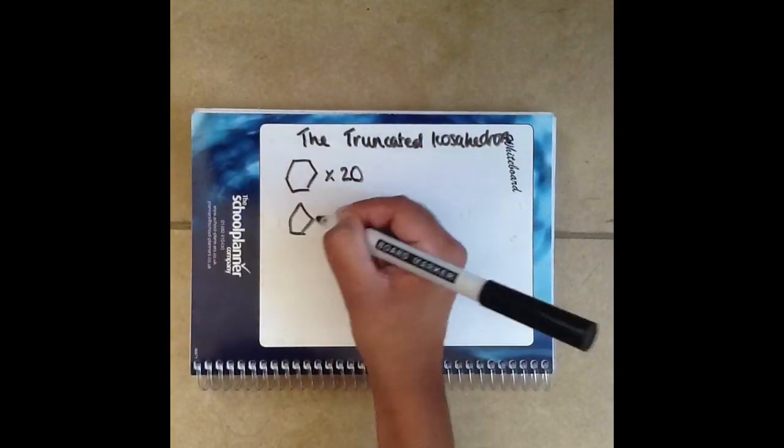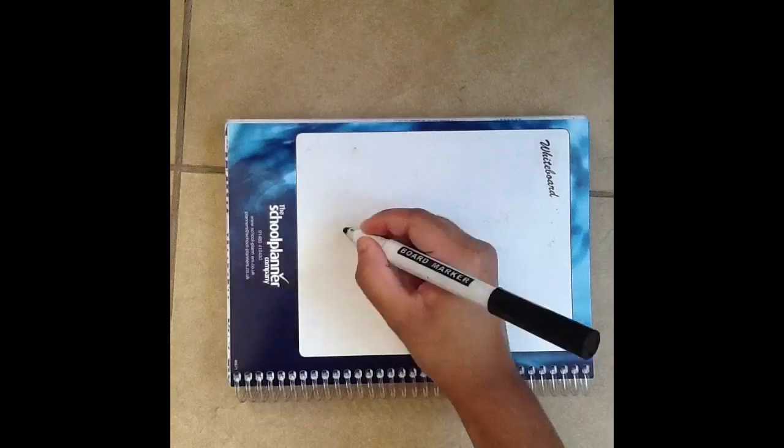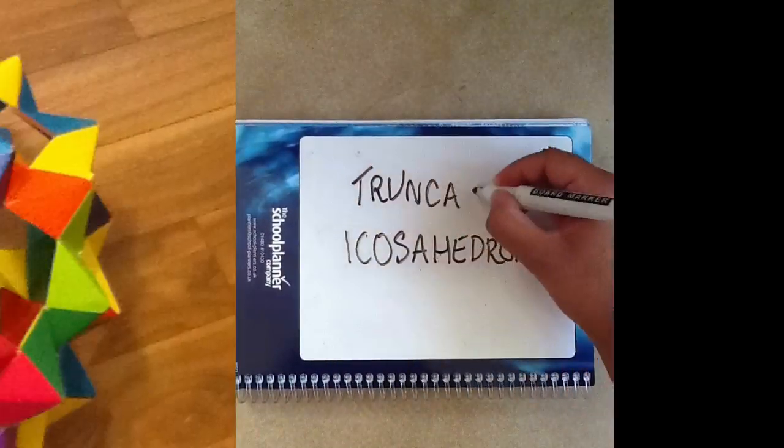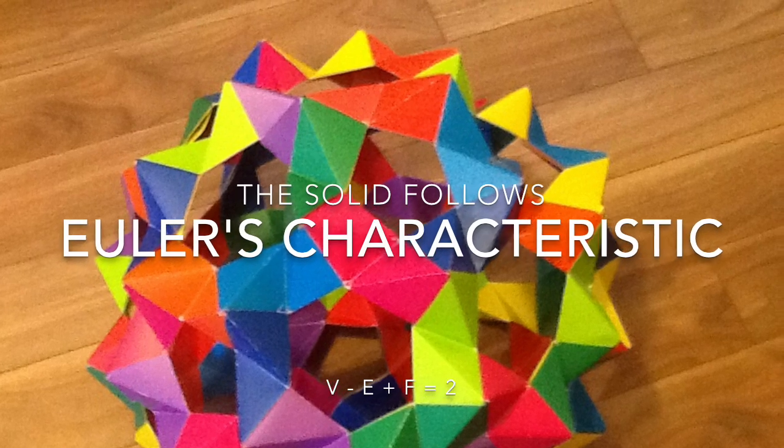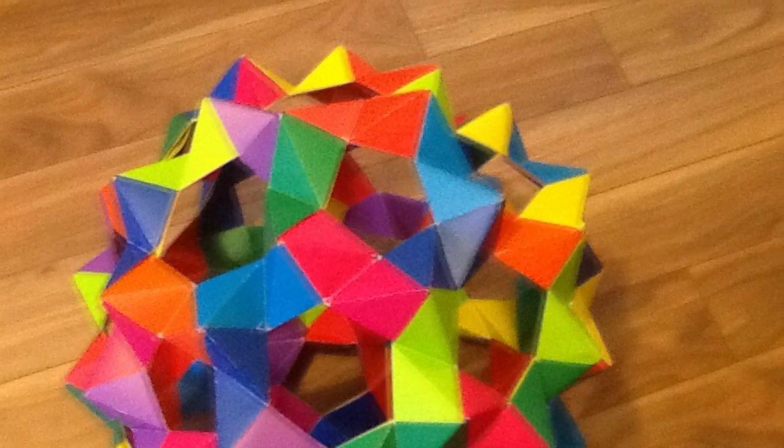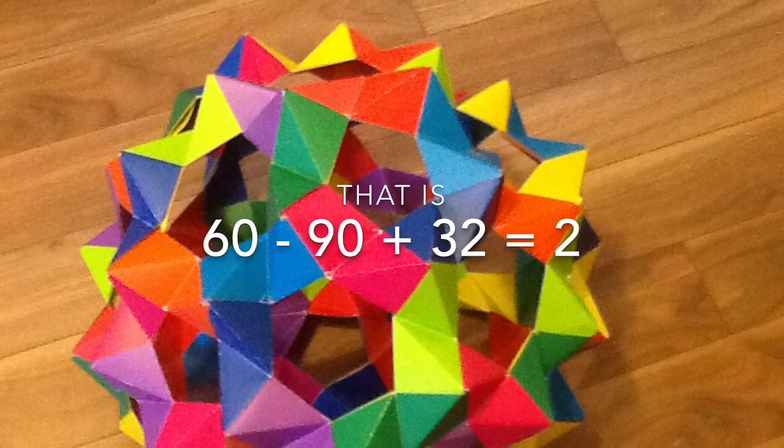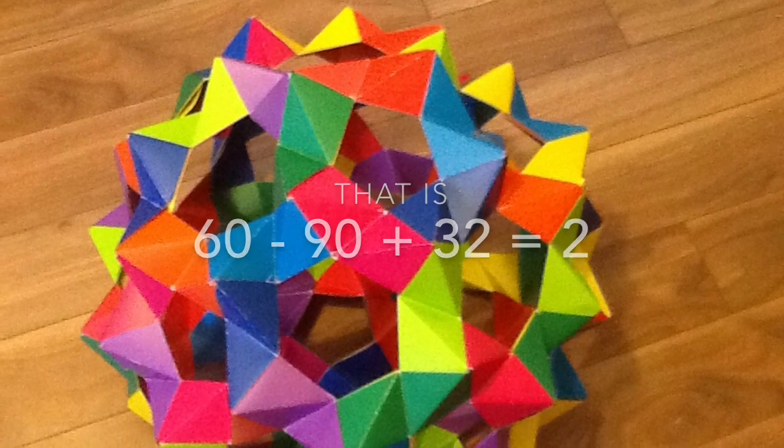Your solid has 32 faces, 60 vertices and 90 edges. And that is how your truncated icosahedron is derived. It follows Euler's characteristic. That is V minus E plus F equals 2. To substitute, 60 minus 90 plus 32 is equal to 2.